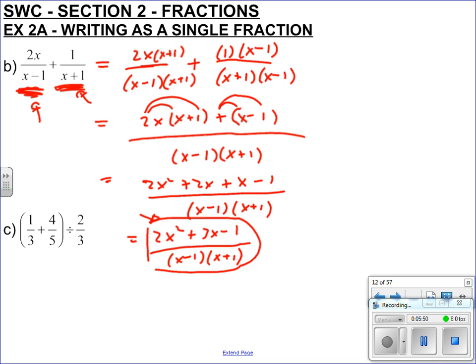Part C. Normally with BODMAS or BIDMAS, whatever you called it, this division would take precedent - it would be 4/5 divided by 2/3 plus a third at the end. But as these brackets are here, it means that this has to be taken first by itself.